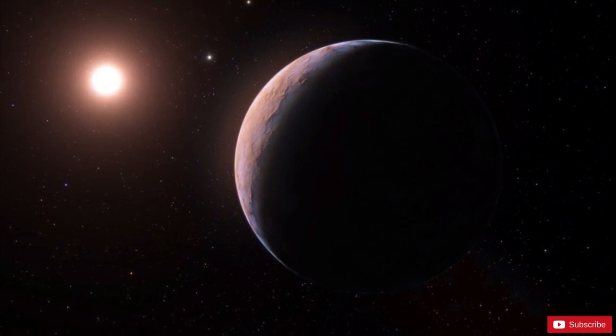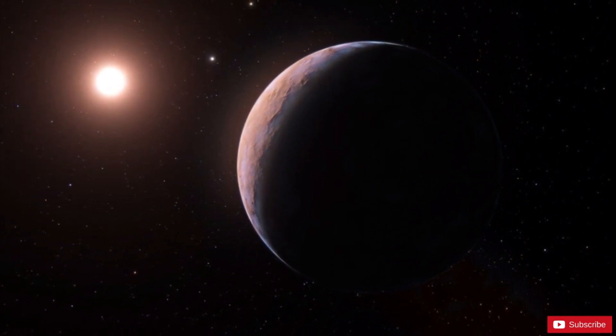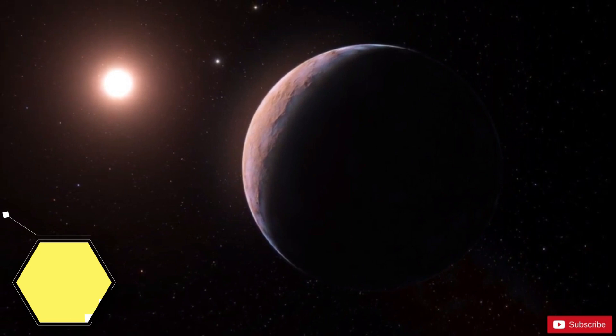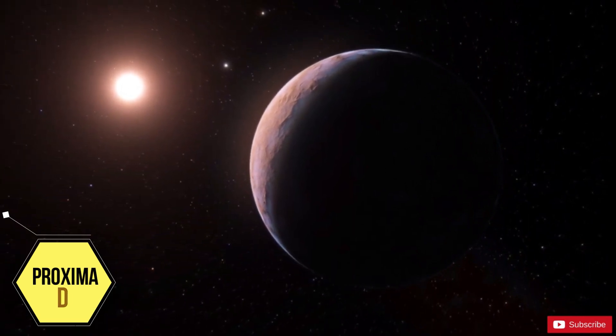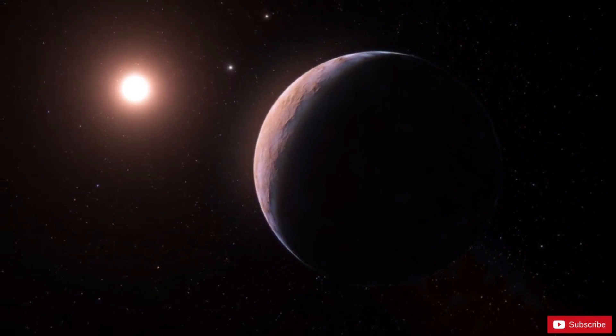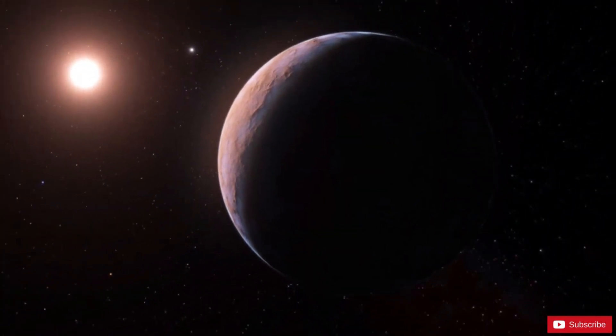Now, meet the third possible planet orbiting our nearest star. The astronomers call the new world Proxima d. This follows the discovery of the two previous planets, Proxima b and Proxima c, in 2016 and 2020, respectively.